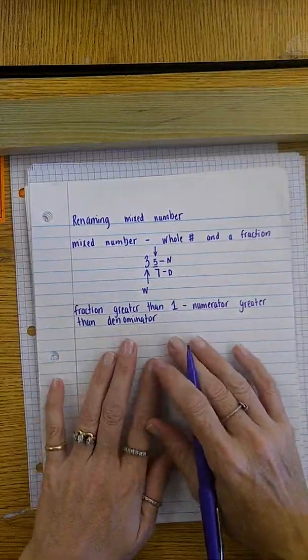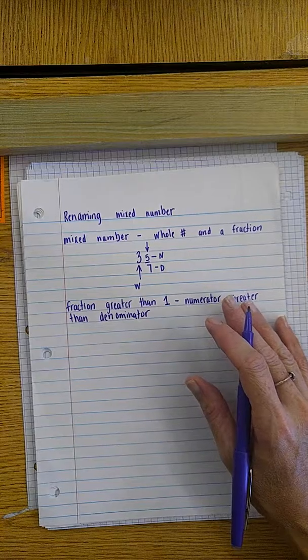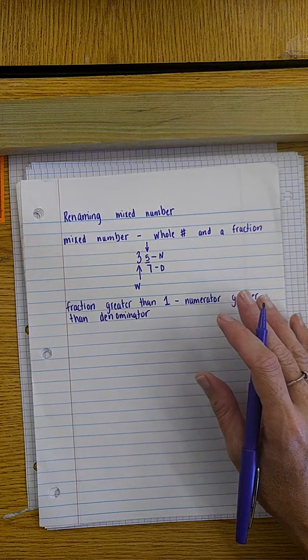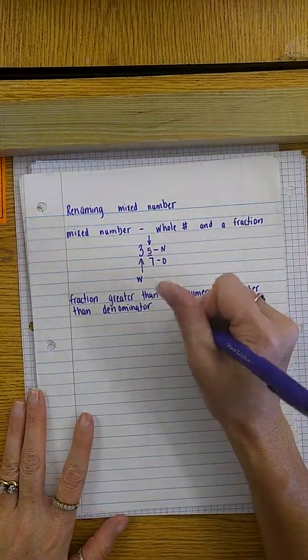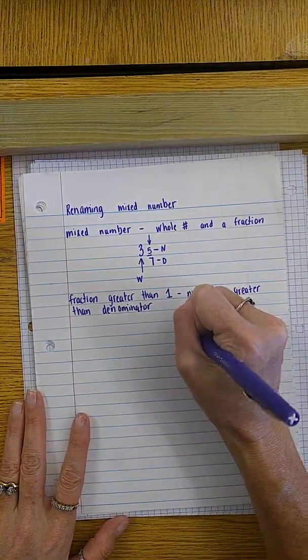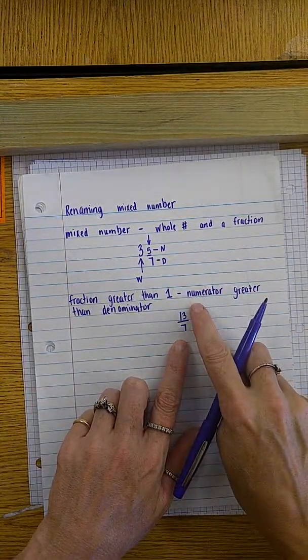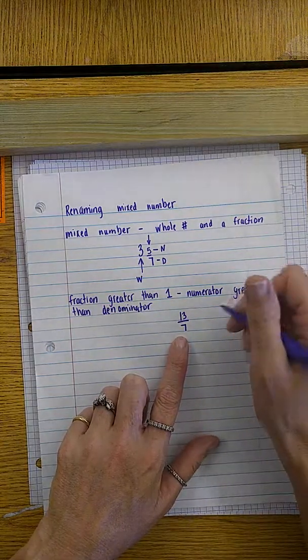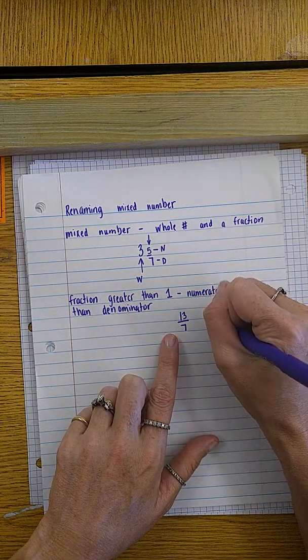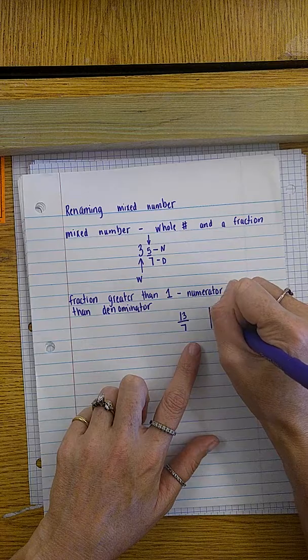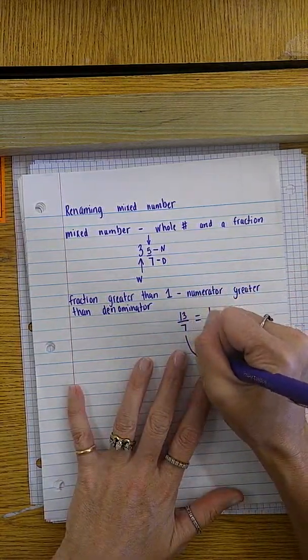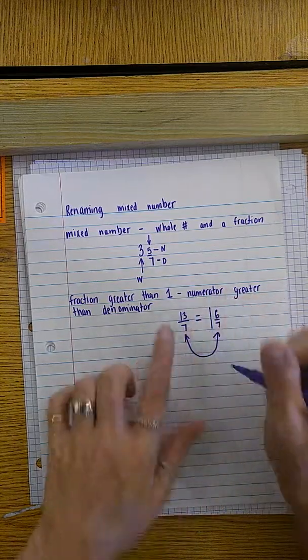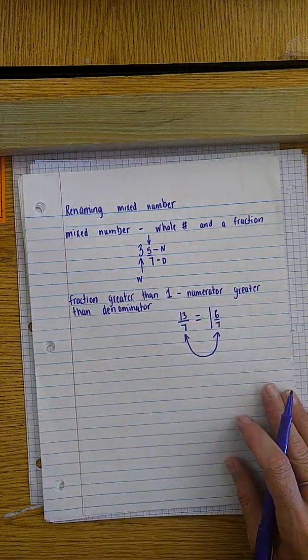For parents, that was previously known as an improper fraction, but the vocabulary that we use now is called a fraction greater than one. And this is an example, 13 sevenths. That means that the numerator is greater than the denominator and that is equivalent to one and six sevenths. They are equivalent. They're equal. And the point of this is so that students know that this and this have the exact same value.